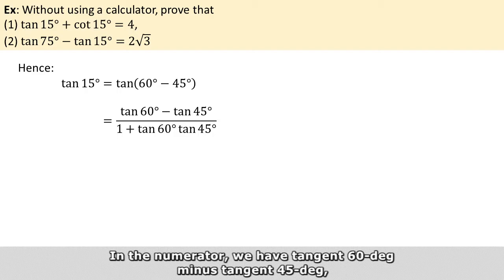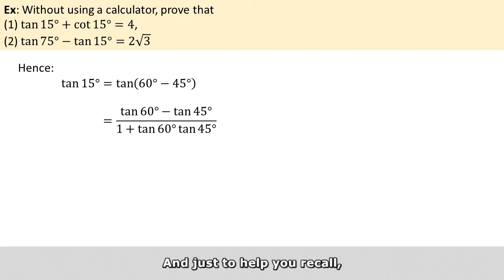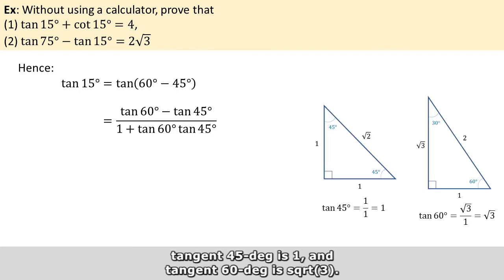In the numerator, we have tangent 60 minus tangent 45. And in the denominator, we have 1 plus tangent 60 times tangent 45. And just to help you recall, tangent 45 is 1 and tangent 60 is square root of 3.